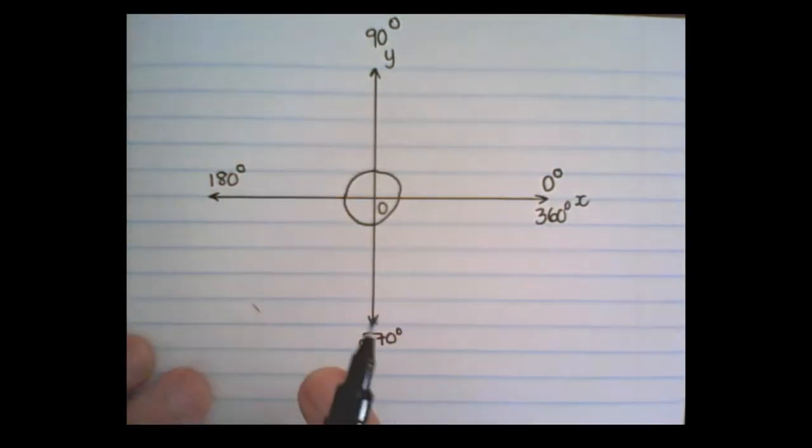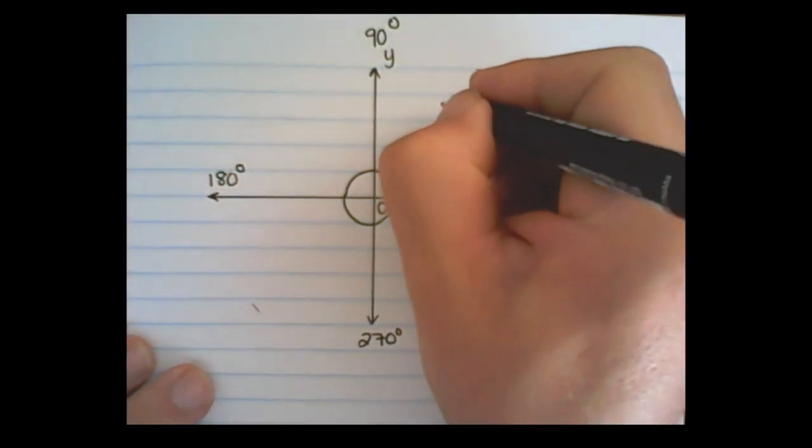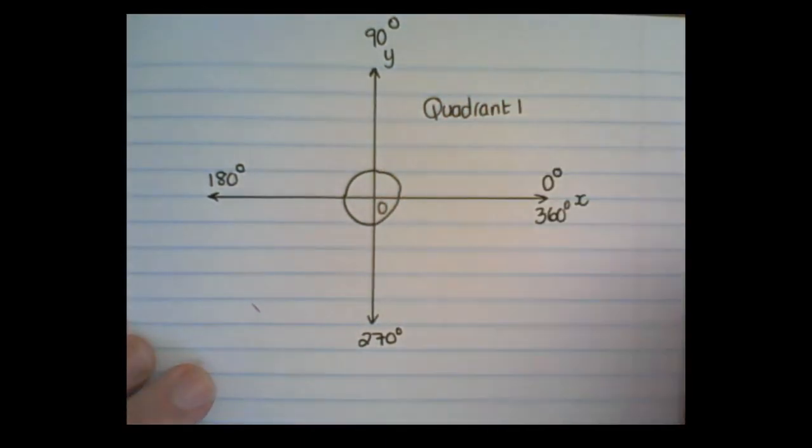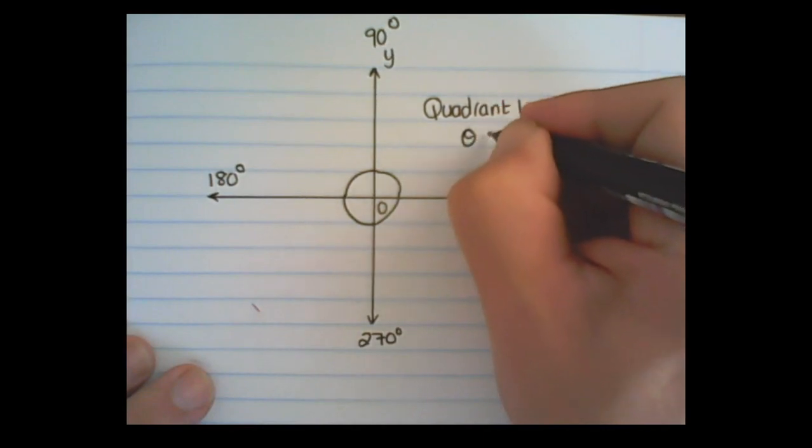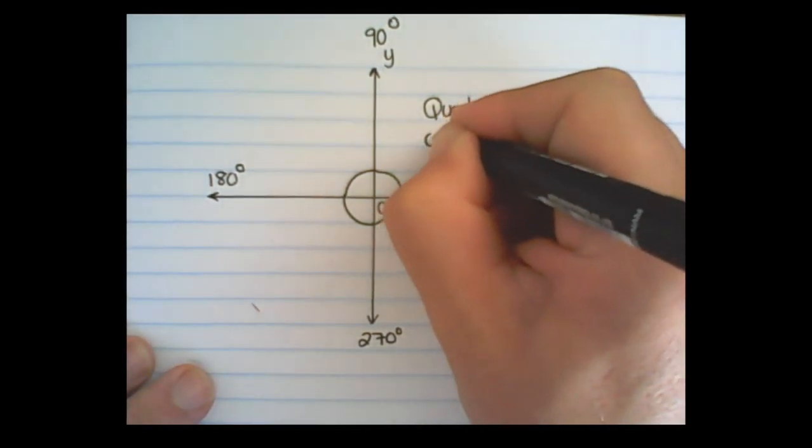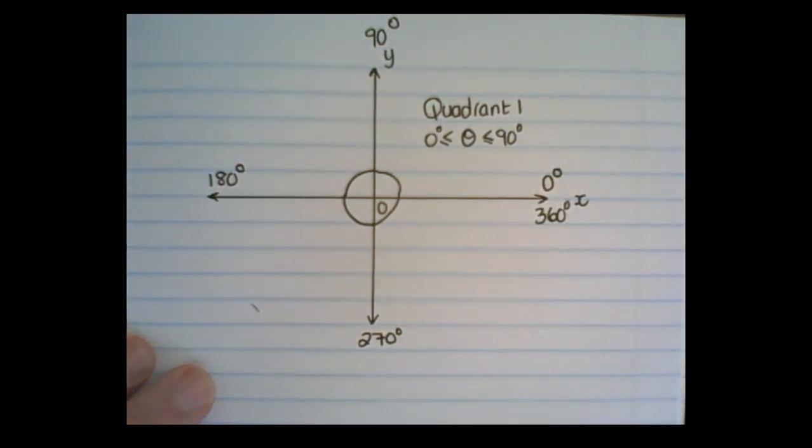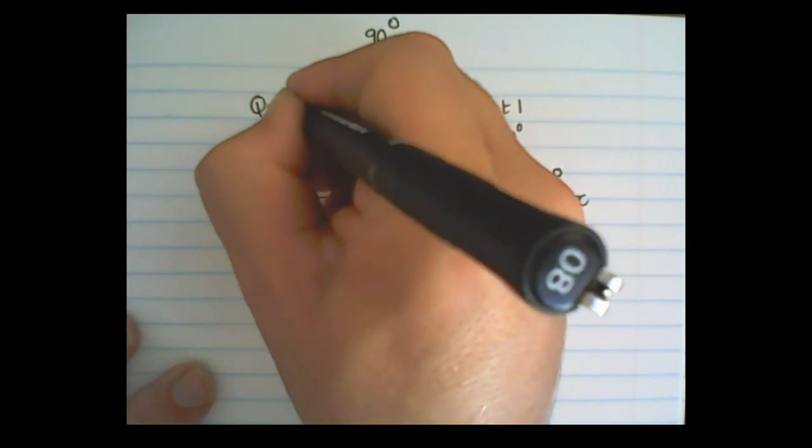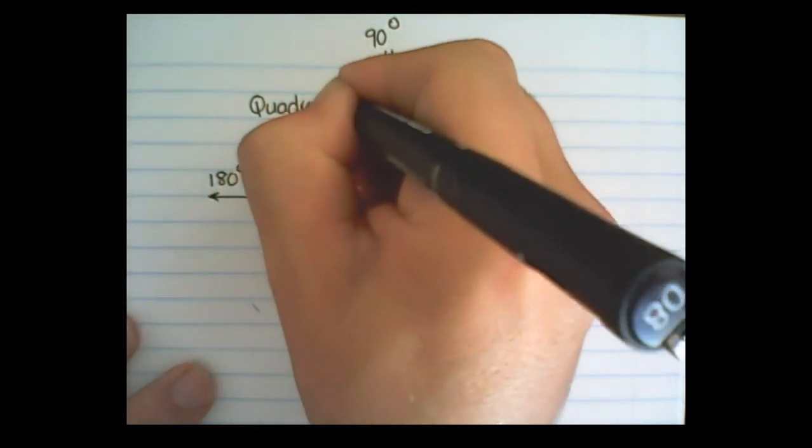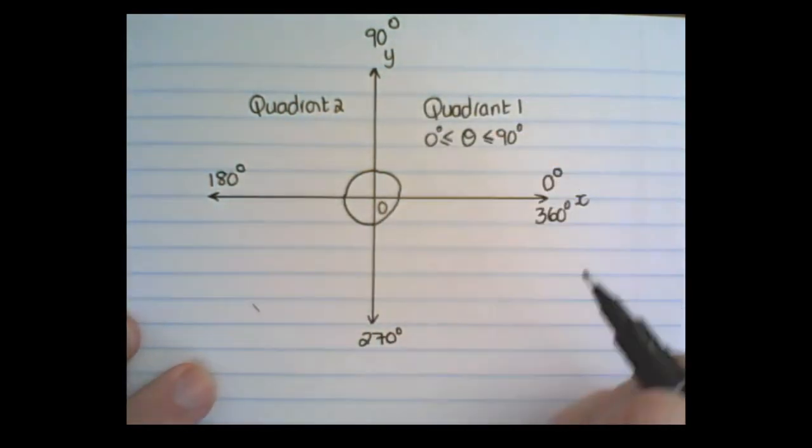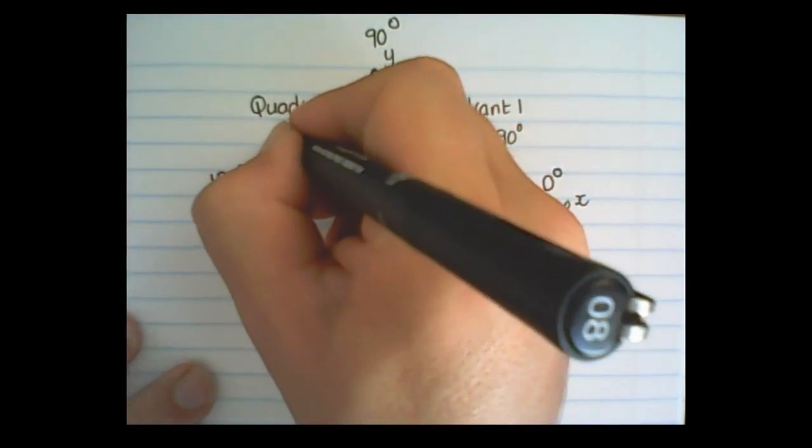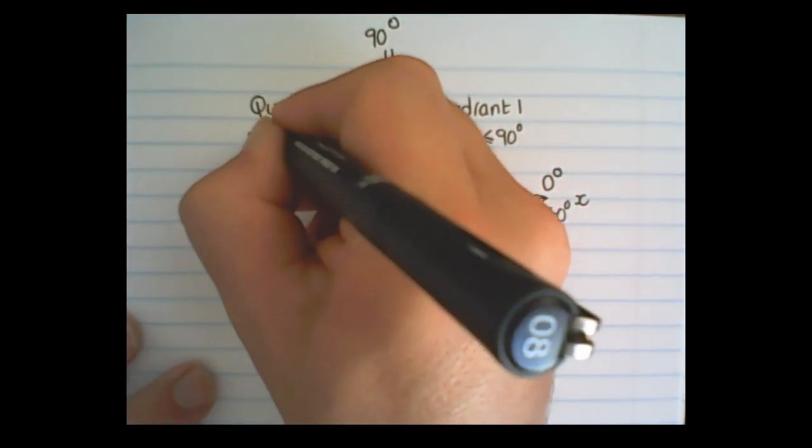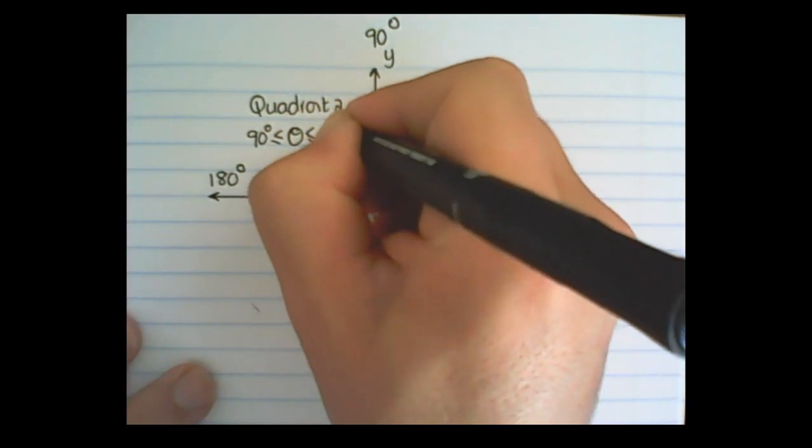And I can name each quadrant. This is called quadrant 1, and it represents the values between 90 degrees and 0 degrees. This is called quadrant 2, and it represents the values from 90 degrees up until 180 degrees.